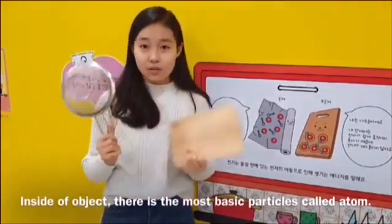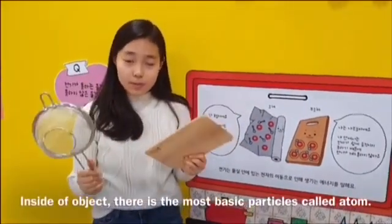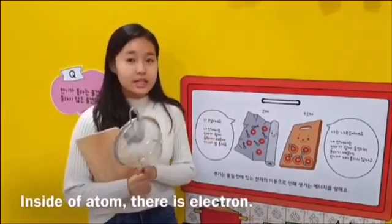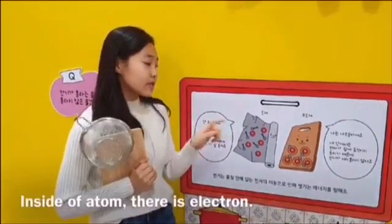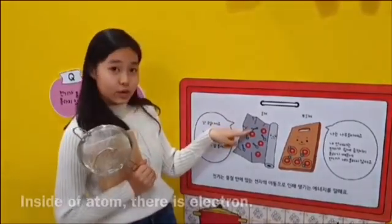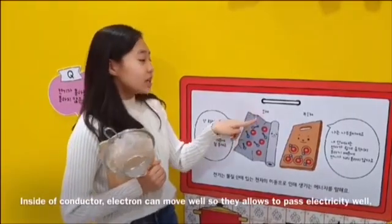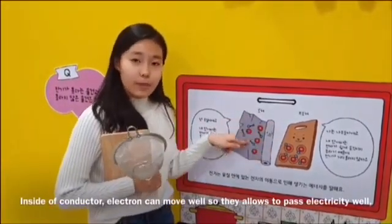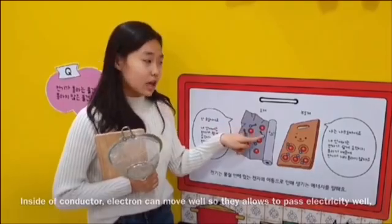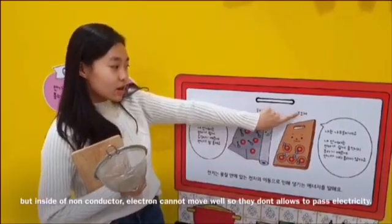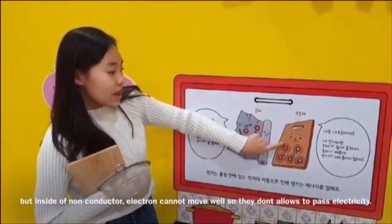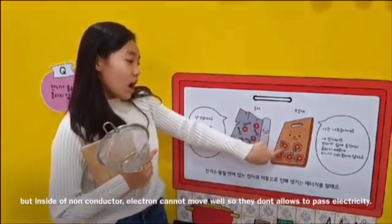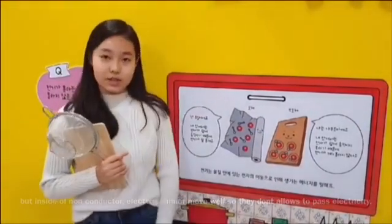Inside every object, there is an amazing particle called the atom. Inside the atom, there is an electron. Inside a conductor, the electrons can move freely, so they allow electricity to pass through. But inside a non-conductor, the electrons cannot move freely, so they don't allow electricity to pass through.